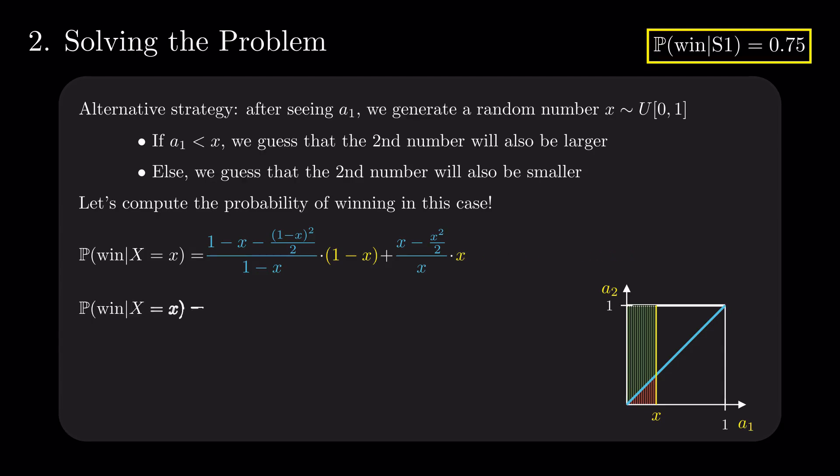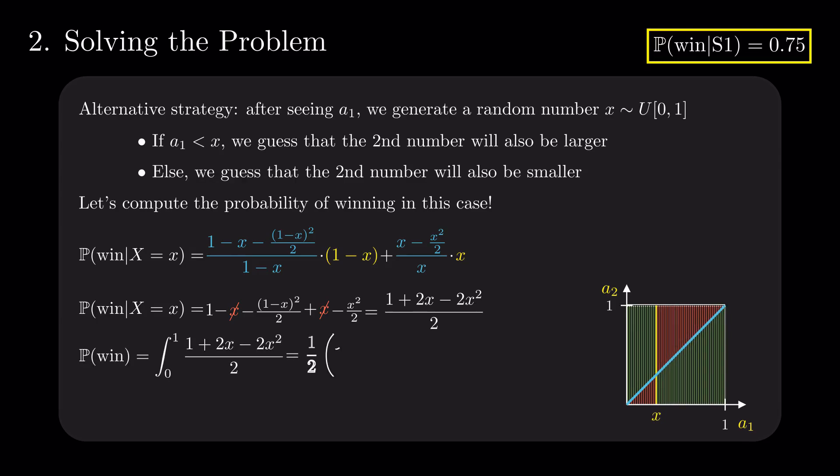Unfortunately, this is not enough to tell us what the general probability to win is. For that, we need to average over all possible values of x. Since x is uniform with probability density function 1, averaging is equivalent to the summation over the continuum of the interval. That is simply the integral. After some trivial calculus, we get at the probability of winning as 2 divided by 3.